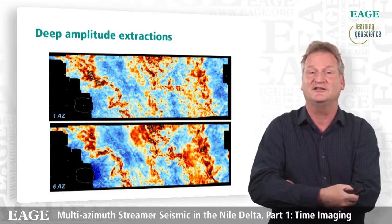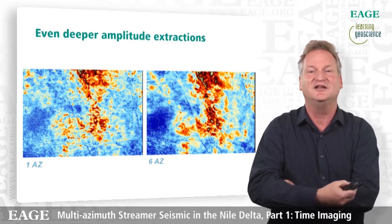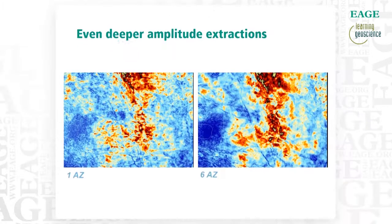Going to the next amplitude extraction from even deeper in the section, you see similar improvements. The darker blue lines on the right-hand side show where fold planes are a lot clearer, and amplitude continuity is a lot better — a lot less patchy. This gives you a lot more confidence that what you're looking at is a true indication of lithology or hopefully even fluid fill.